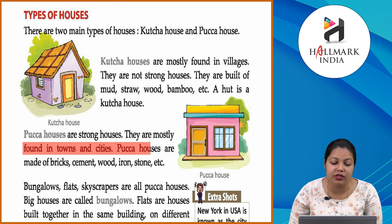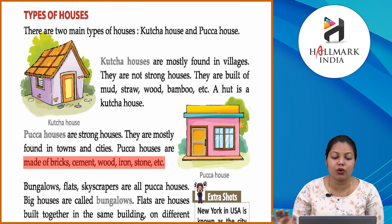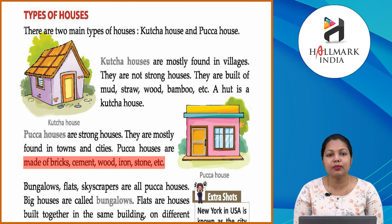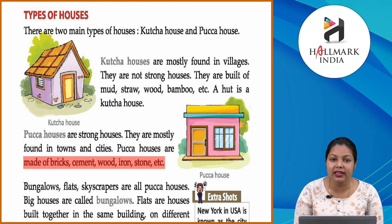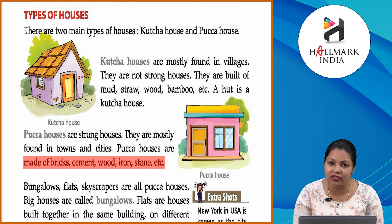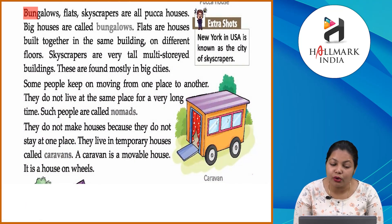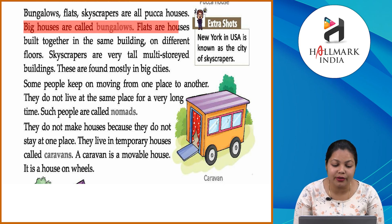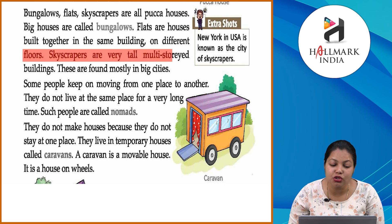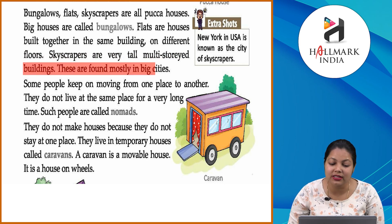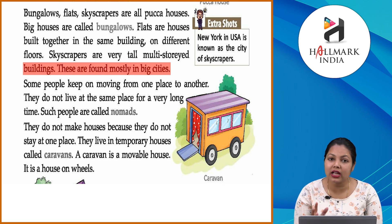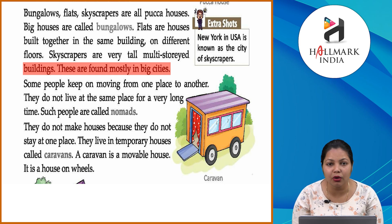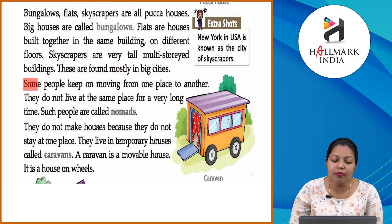Pakka houses are strong houses; they are mostly found in towns and cities. Pakka houses are made of bricks, cement, wood, iron, stone, etc. Bungalows, flats, and skyscrapers are all pakka houses. Big houses are called bungalows. Flats are houses built together in the same building on different floors. Skyscrapers are very tall, multi-storey buildings found mostly in big cities.